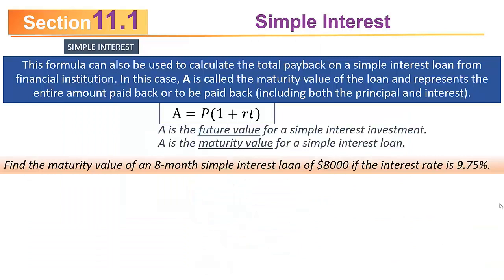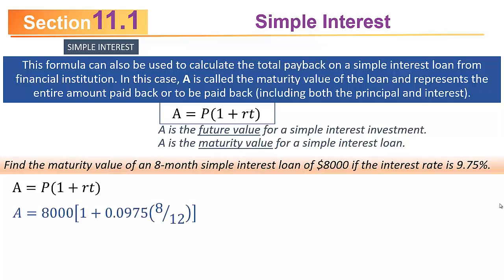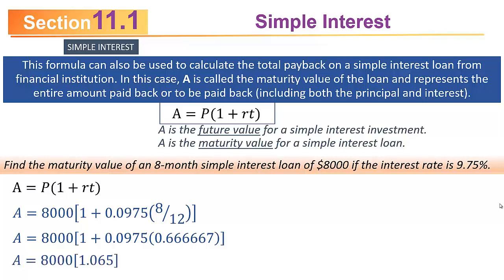Find the maturity value of an eight-month simple interest loan of $8,000 if the interest rate is 9.75%. Using A = P(1 + RT): principal is $8,000, r is 0.0975, and t is 8/12 = 0.666667 years. Multiplying 0.666667 × 0.0975 and adding 1 gives 1.065. Multiplying by 8,000 gives approximately $8,520. So the maturity value of the eight-month loan is $8,520.